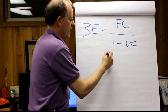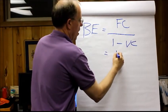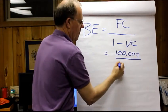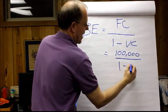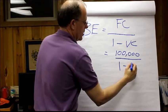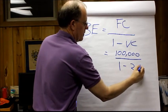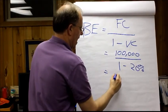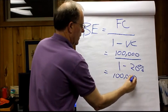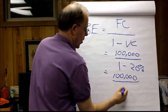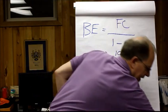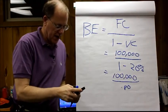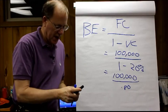So real quickly, if your fixed costs are $100,000 and your variable costs are let's say 20%, then you would have $100,000 divided by 0.8. Let's do a quick calculation here, I haven't done this in advance.